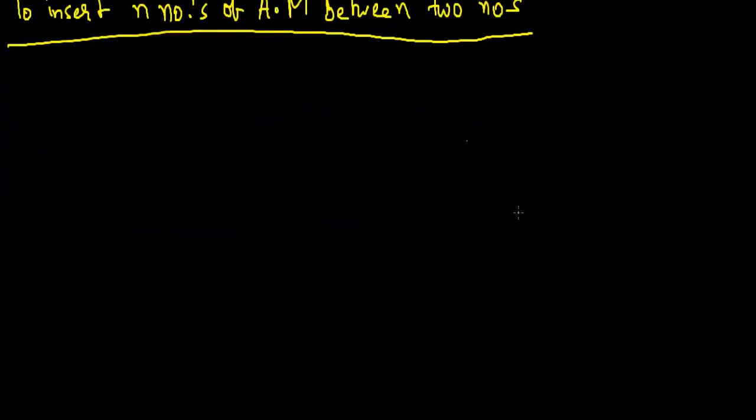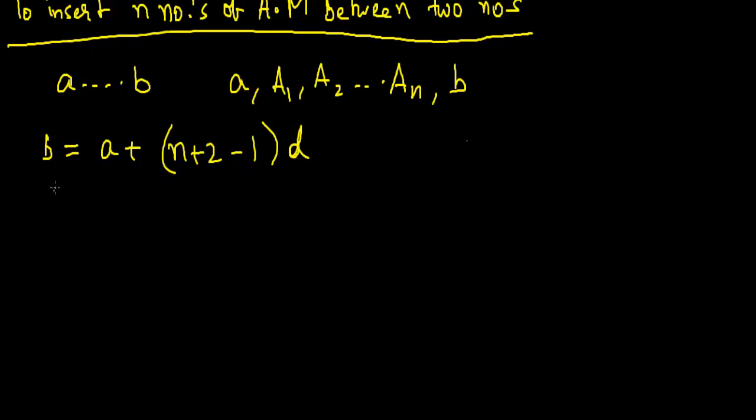Let us see how to do it. Suppose we need to insert between a and b. We will be inserting something like this: A1, A2, and AN, and finally b. We can say that b is equals to a plus (n plus 2) minus 1 times d, because our n has increased by 2. This a and b are here. B will be equivalent to a plus (n plus 1) times d. Now let me first find the common difference. Common difference d will be equals to (b minus a) upon (n plus 1).